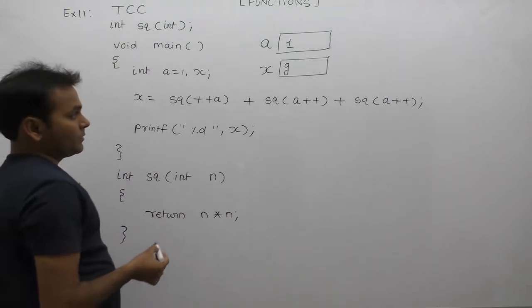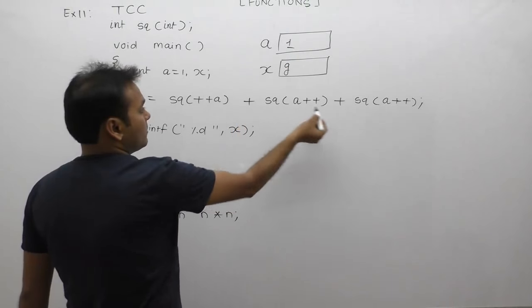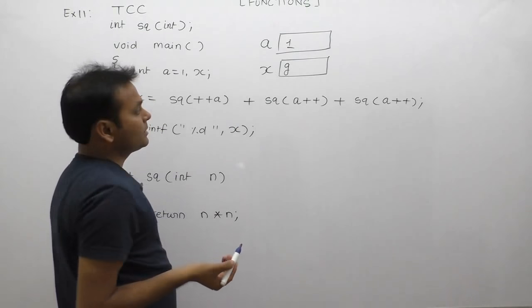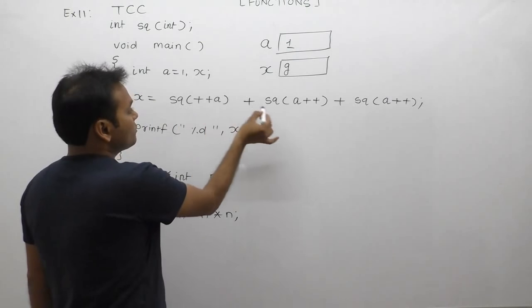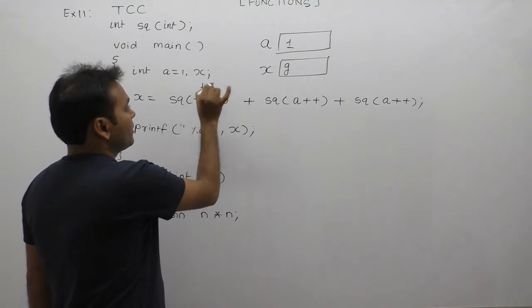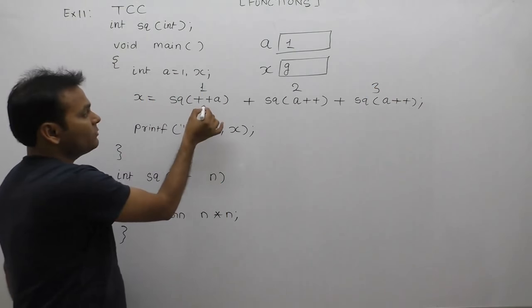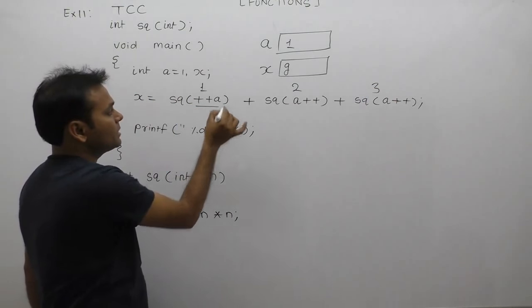First level, then second level, then third level. First case - call the sq function, passing a++, which means post-increment. So we pass the current value first.